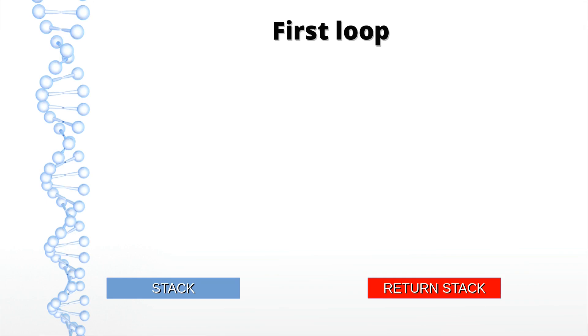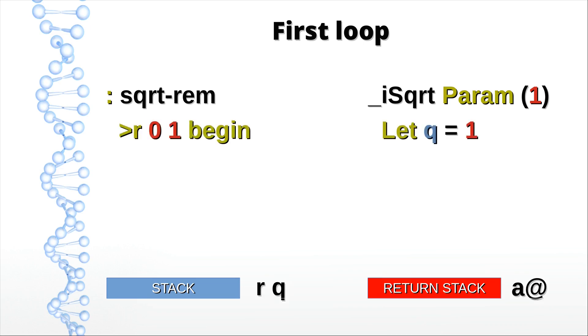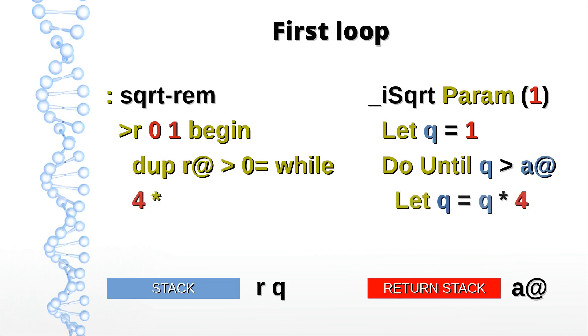Now let's tackle the first loop. We got the declaration. Now we initialize and distribute our first three variables. We can simply duplicate q and get a-fetch from the return stack in order to evaluate the condition. Unless q is greater than a-fetch, we multiply q by 4 and repeat.